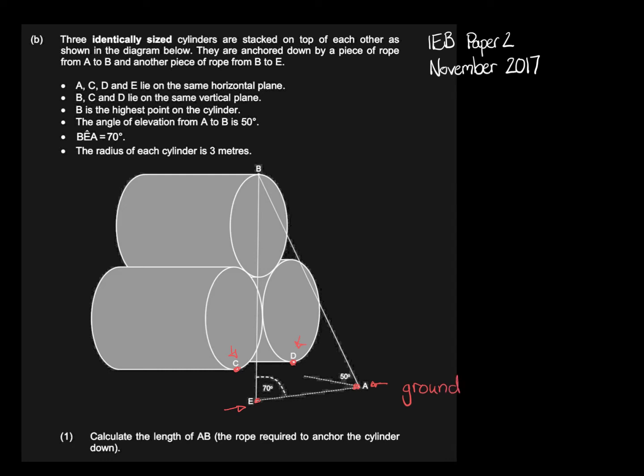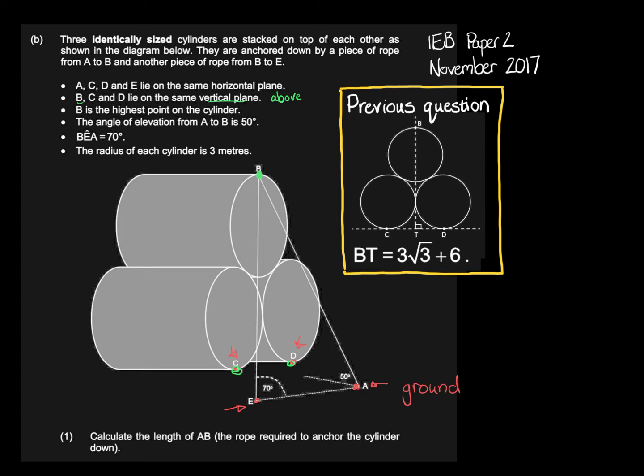That's what they're saying even though it doesn't look like it, but that's what they're telling us. B, C, and D lie on the same vertical plane, so they are above each other. B is the highest point on the cylinder. The angle of elevation from A to B is 50 degrees. Angle BEA is 70 degrees. The radius of each cylinder is 3 meters, and that's how I know it builds on the other question.